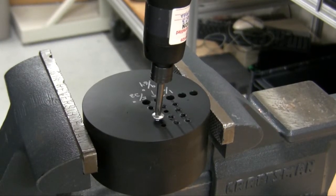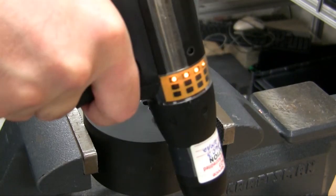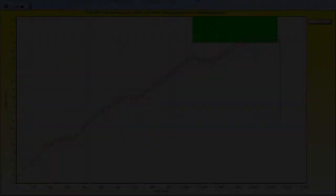When the screw is run into a larger hole, our prevailing torque drops below the PVT monitoring minimum limit. The tool shuts off, and we receive a not-okay result.